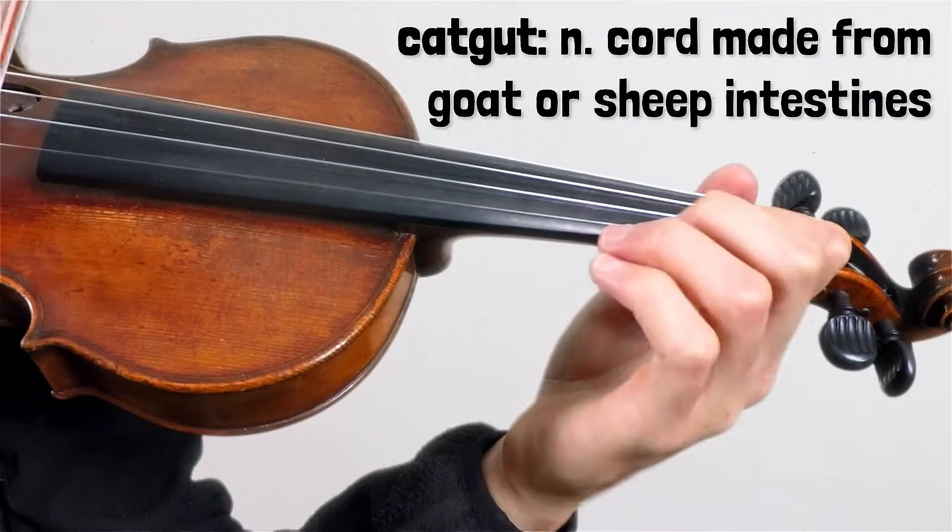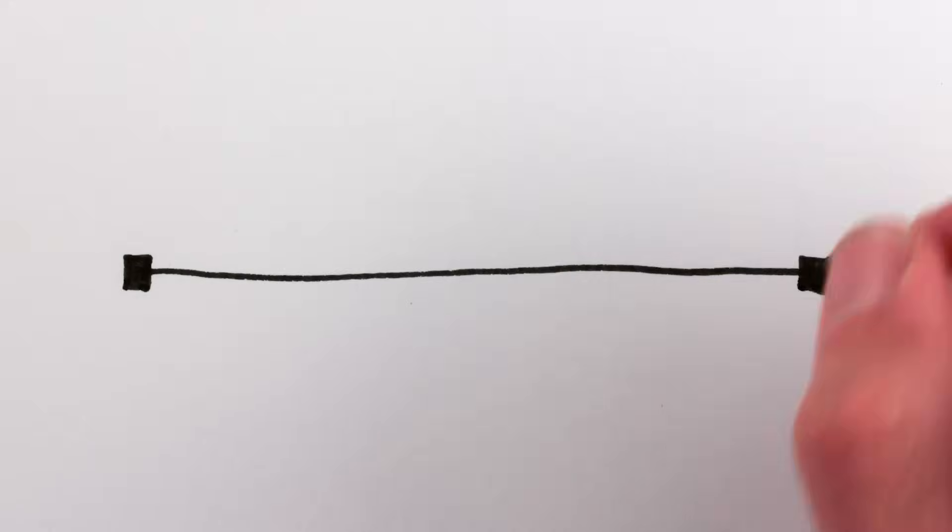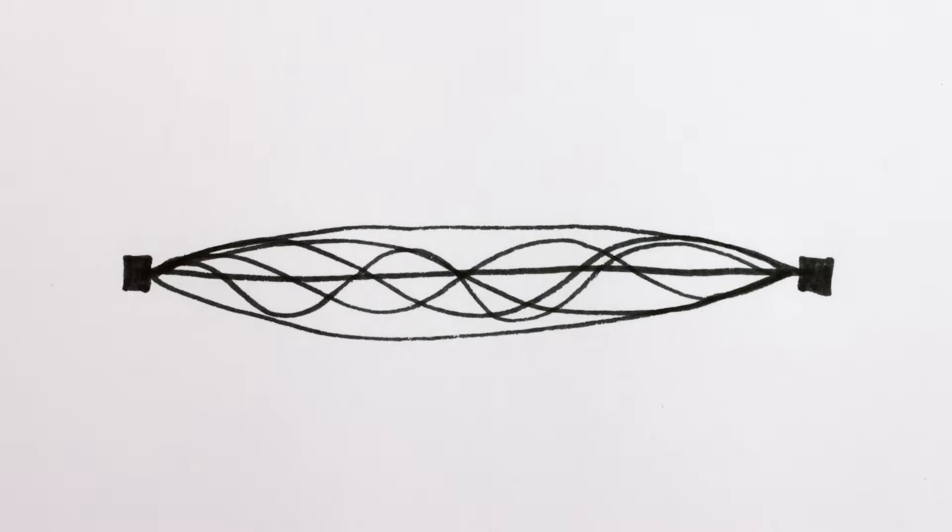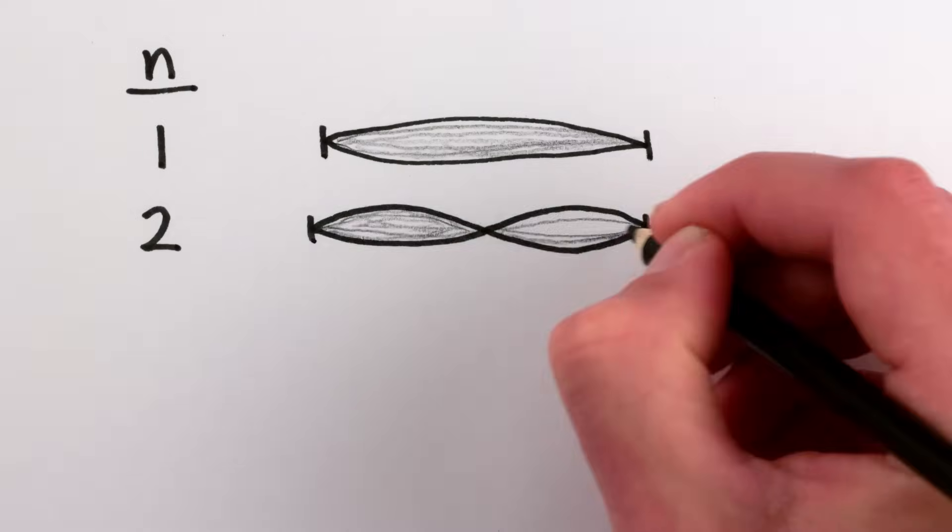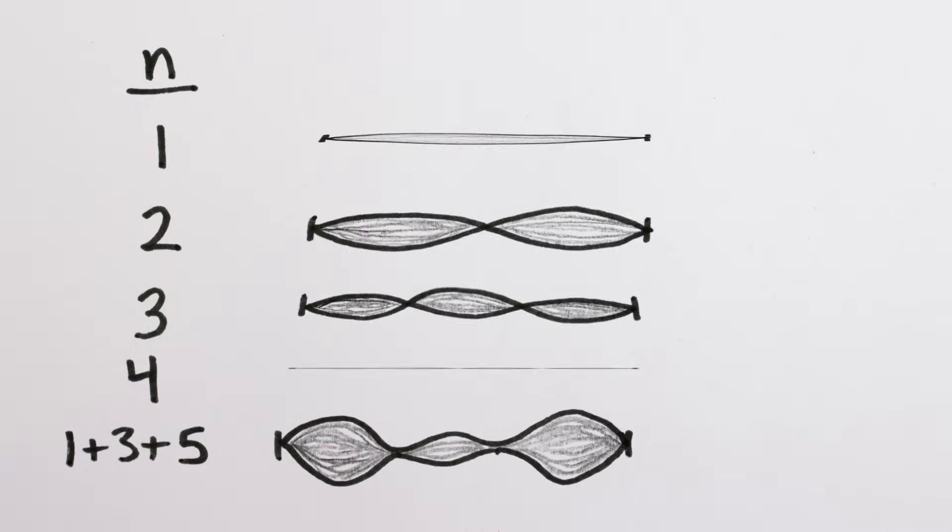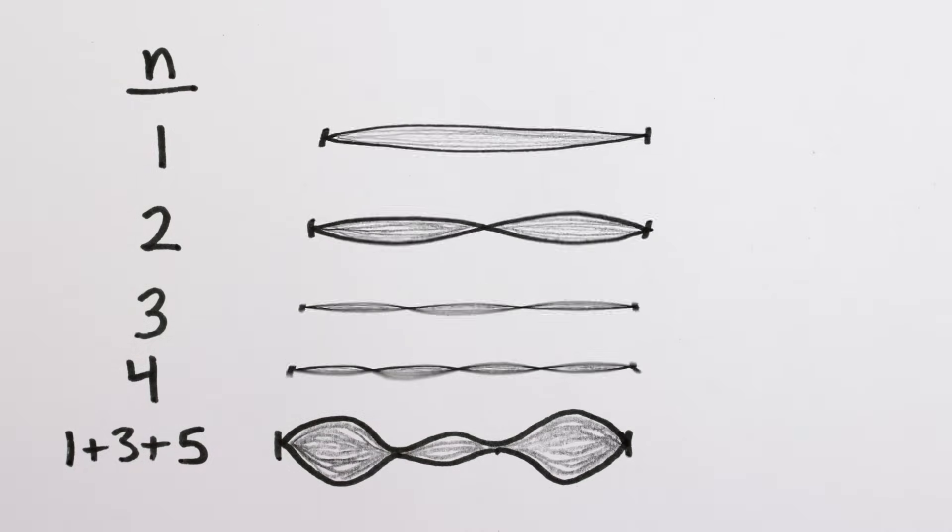But regardless of what it's made out of, when a string vibrates it does so with the ends fixed to the instrument. This means that it can only vibrate in certain ways, sine waves, like a jump rope with one bump or two bumps or three or four or some combination of these bumps. The more bumps, the higher the pitch, and the faster the string has to vibrate.